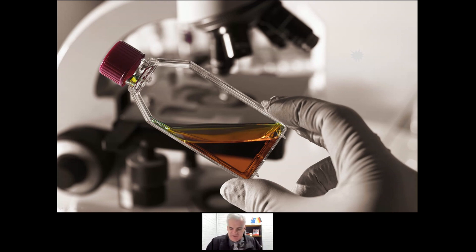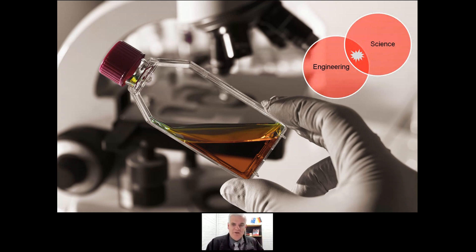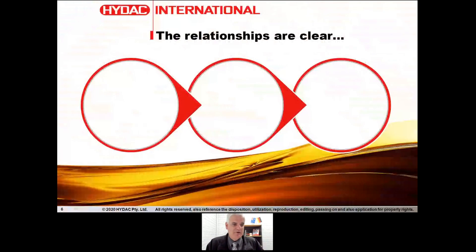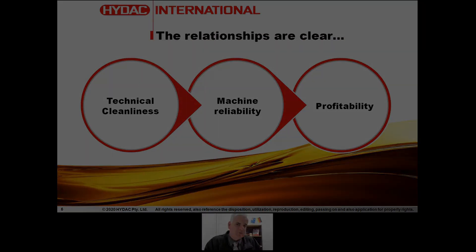The reason for that disconnect is that this subject occurs in that very interesting space in between engineering and science, and this is where the spark happens. Ultimately, we know there is a very clear relationship between technical cleanliness and machine reliability, and a very clear relationship between machine reliability and profitability. It stands to reason — if we can keep our lubricants clean, we keep our machines running, and we make money off those machines.